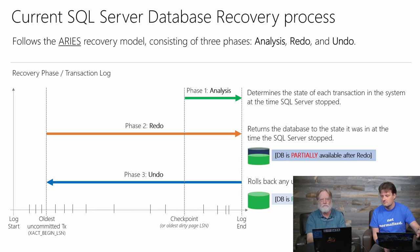Here we have the classic recovery process. Phase one is analysis — you have to look through all the transactions in the log from the last checkpoint forward. Redo is any data changes that haven't been persisted in the data files; they have to be redone from the transaction log, from the beginning of the oldest uncommitted transaction. So that's where the long-running transactions really hurt you — it can take minutes to an hour or more.